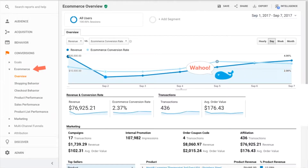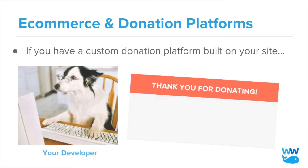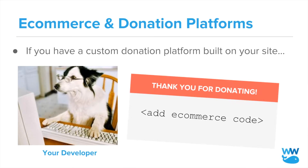Note you could deploy e-commerce tracking using Google Tag Manager, but this video offers simpler processes based on your donation platform of choice. If you have a custom donation platform built on your site, work with your developer to add e-commerce tracking code to the thank you page the donors see after giving. Once added, this code will send data for each transaction into the e-commerce tab in your selected Google Analytics view.